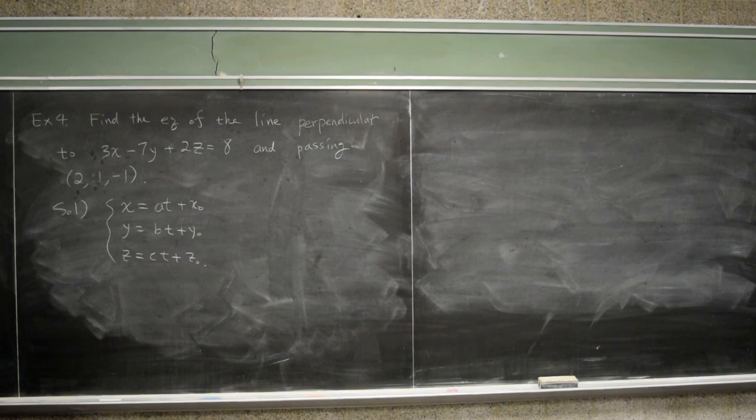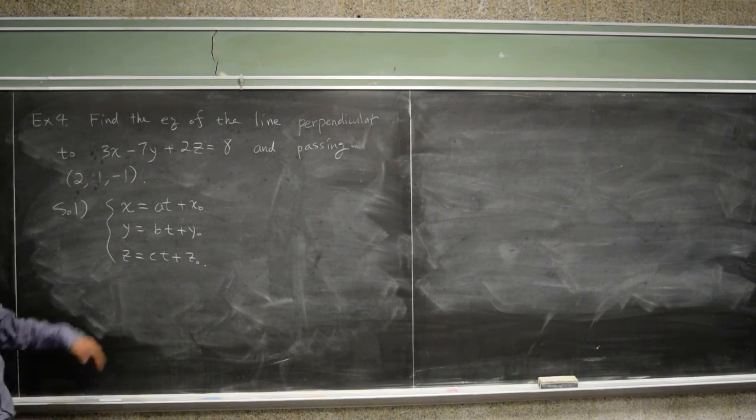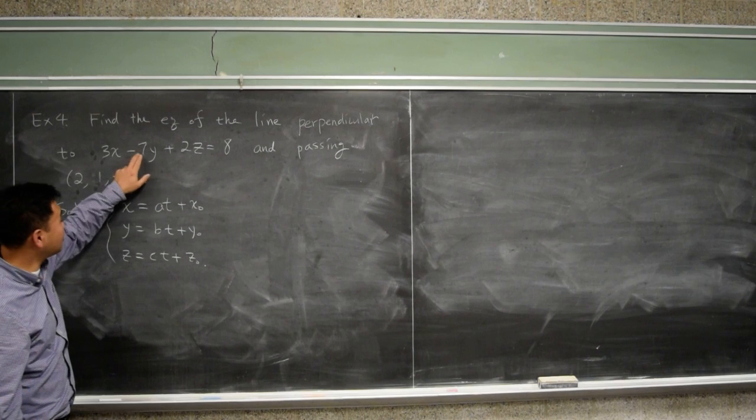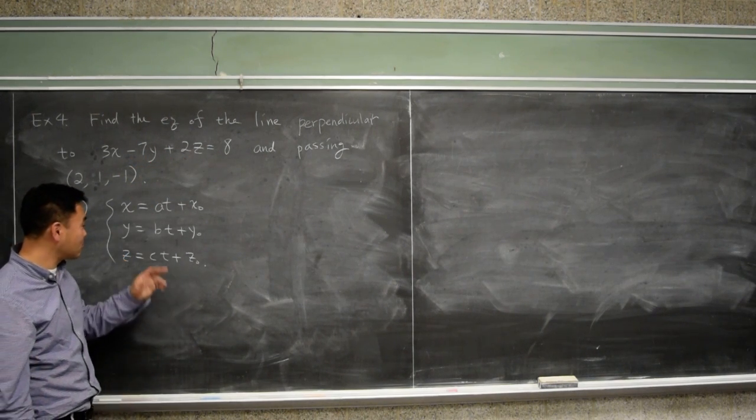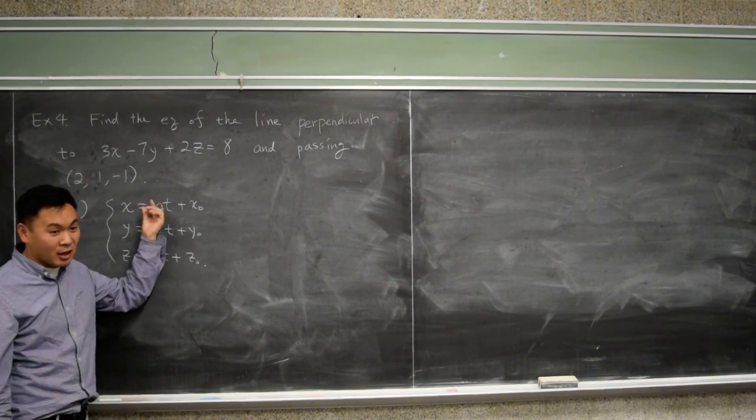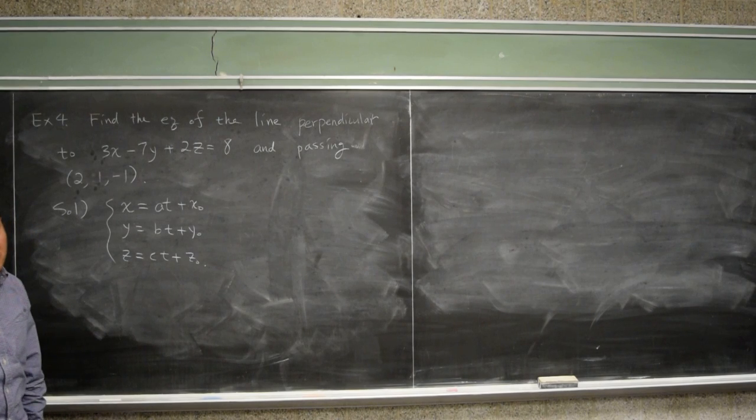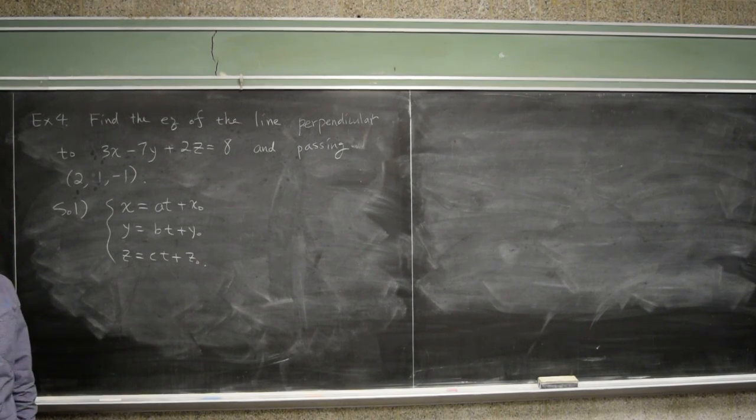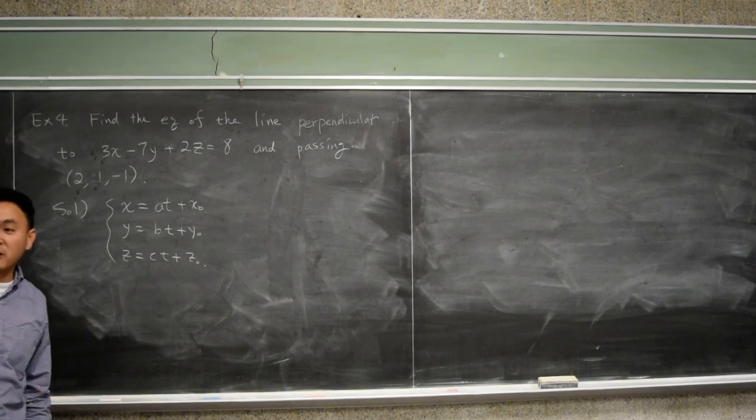Yeah, what makes you think that? You're saying 3, negative 7, 2 should be the normal, should be the A, B, C. What's the reasoning for taking that? Because of the dot product. Yeah, okay, so somebody else raised their hand. Yes?